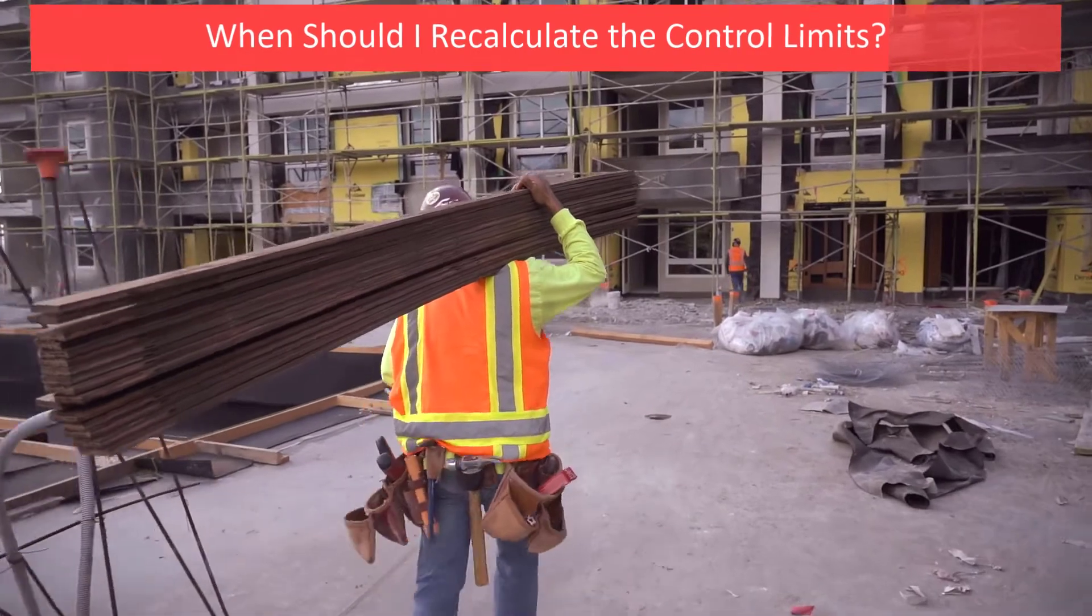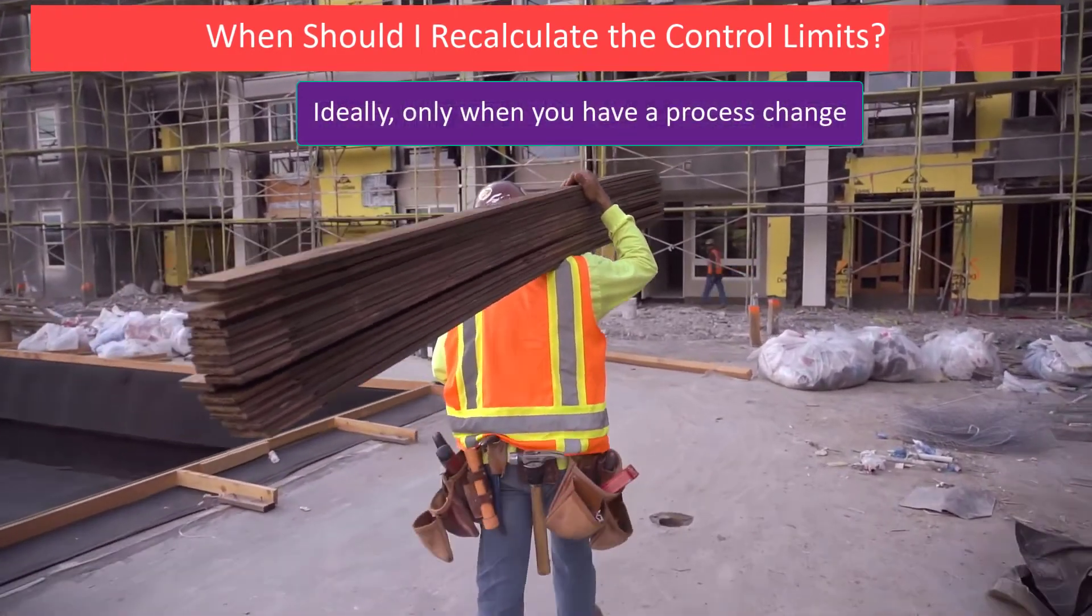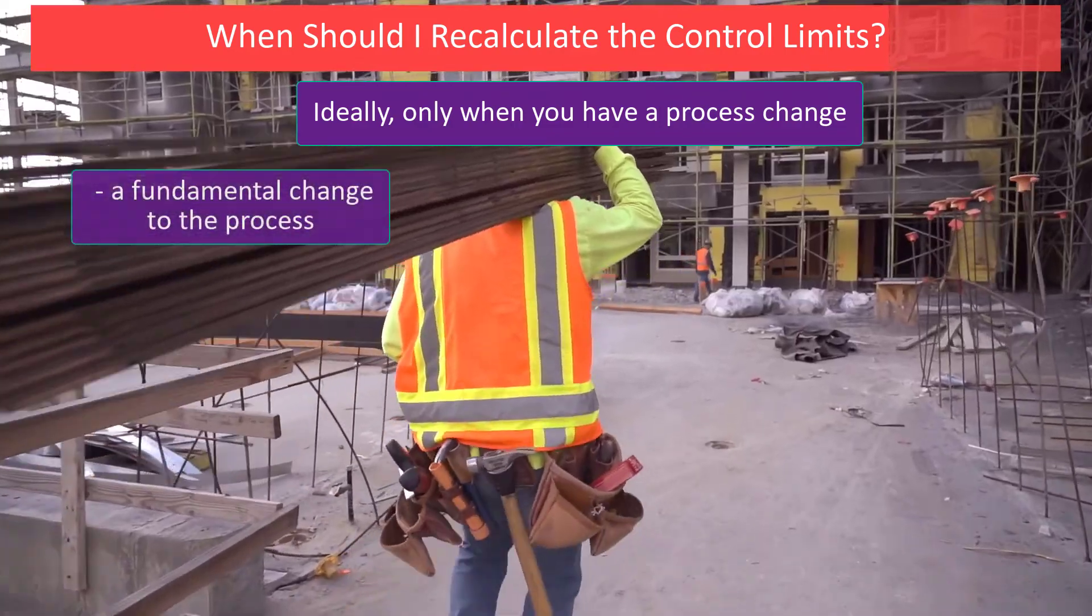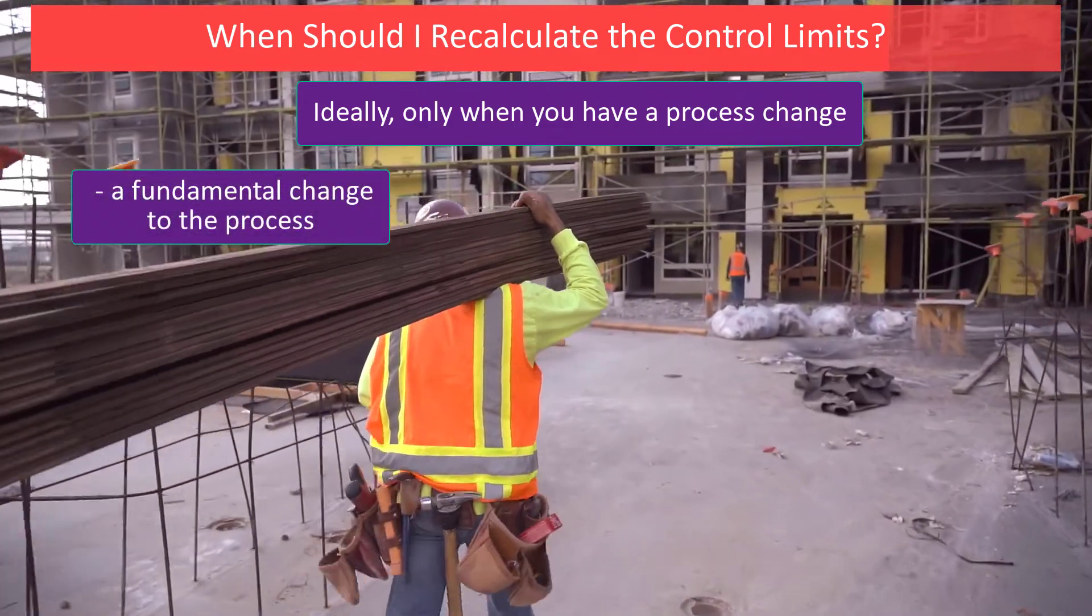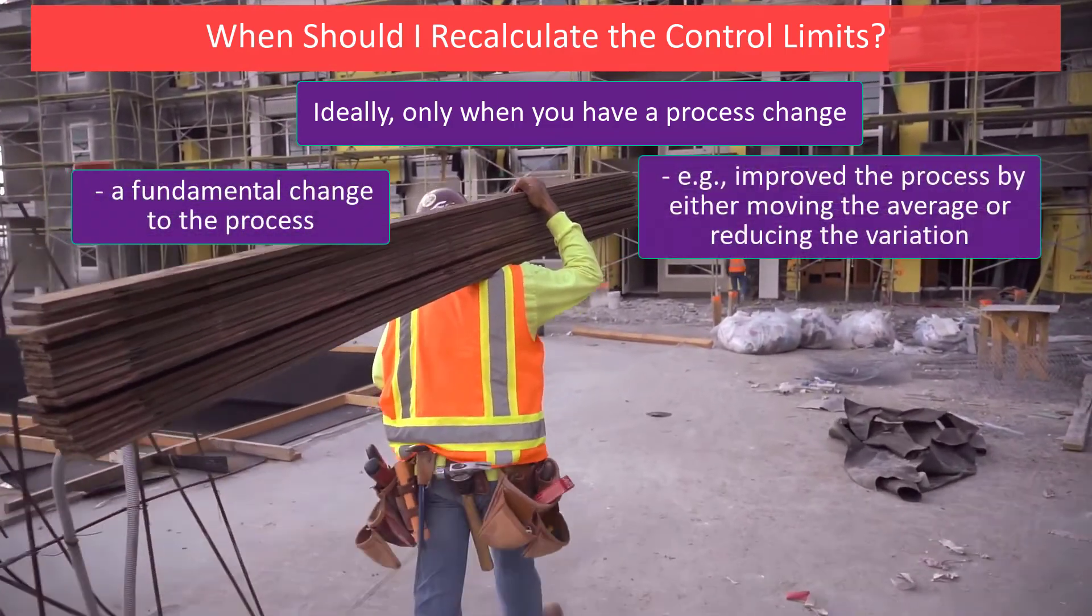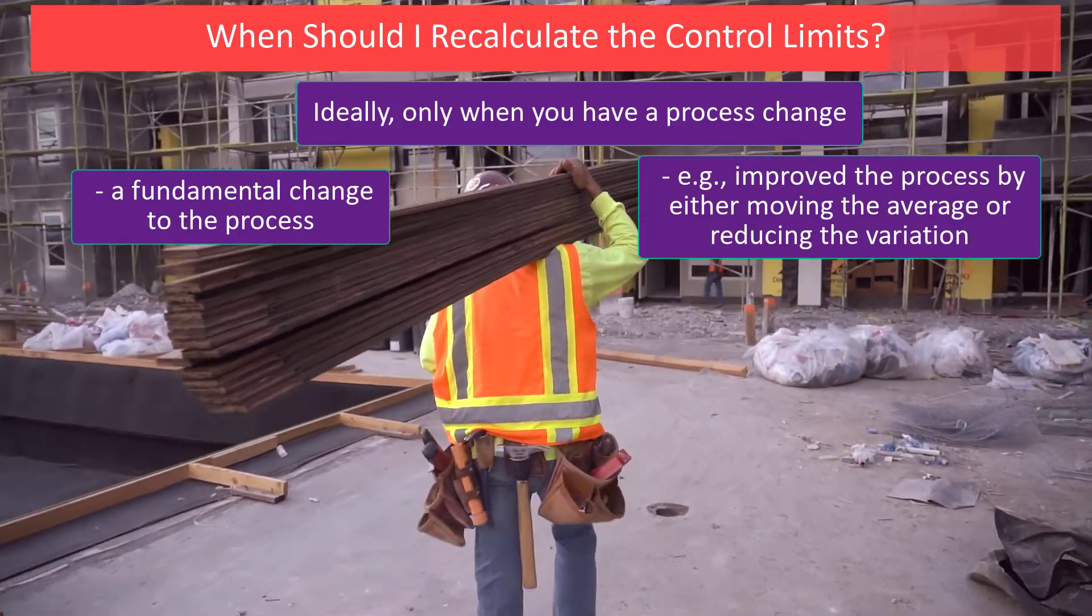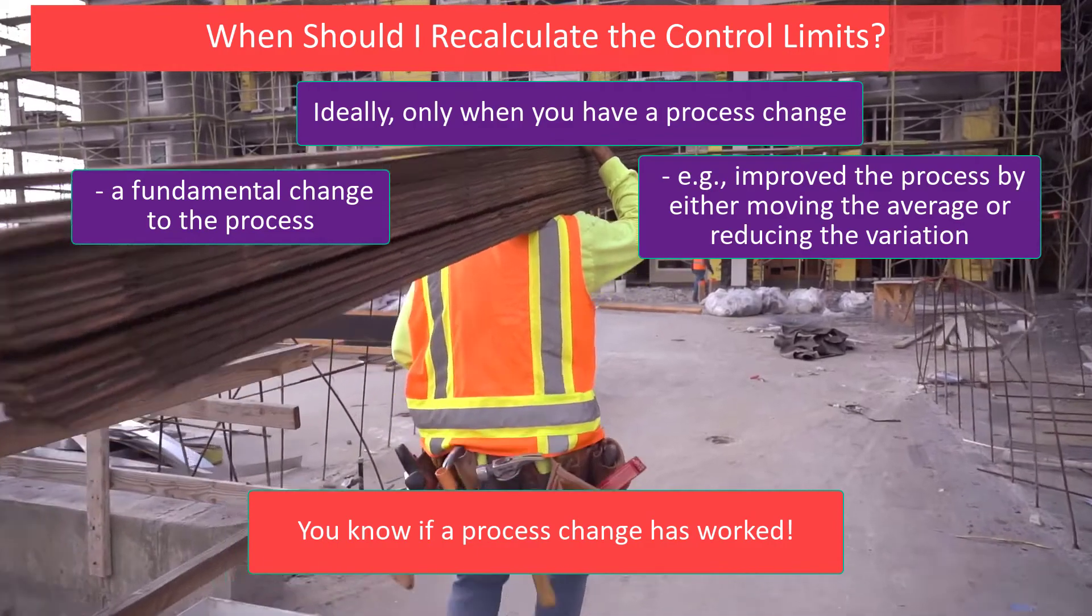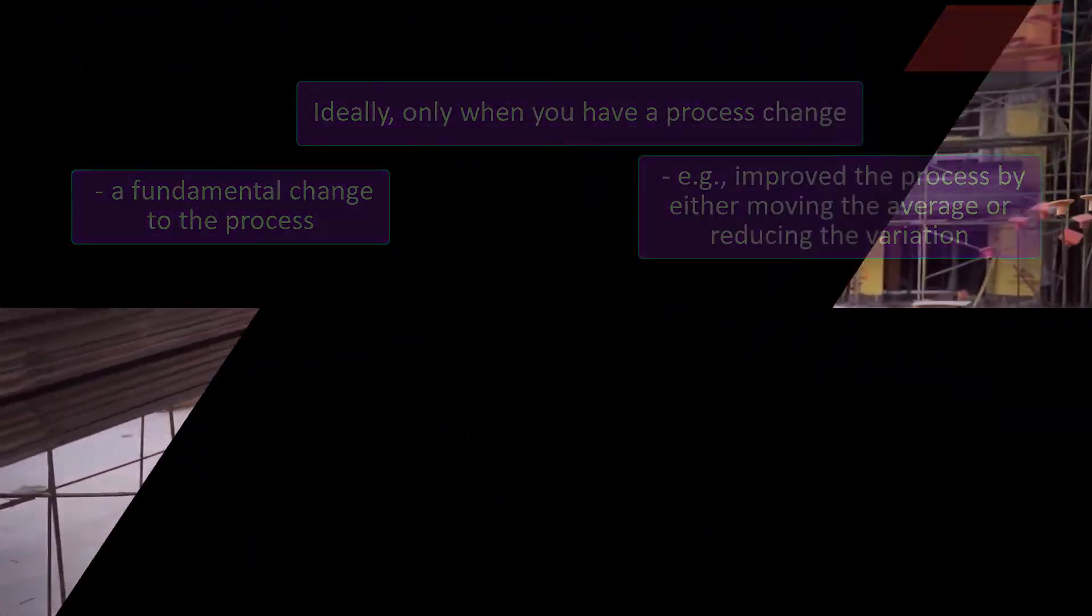Now we're going to take a look at when you should recalculate control limits. Ideally, only when you have a process change. That is a fundamental change to the process. Perhaps you moved your average up or down or you've reduced the variation. But you're going to know if a process change you made has worked by looking at the control chart.